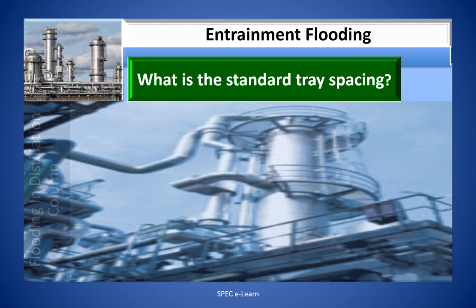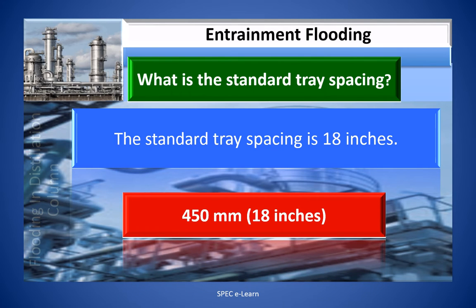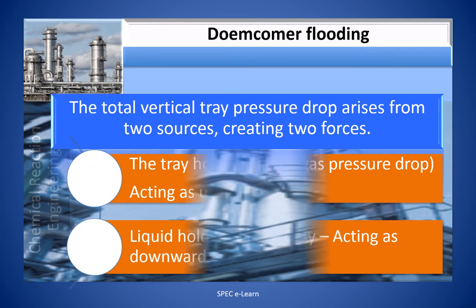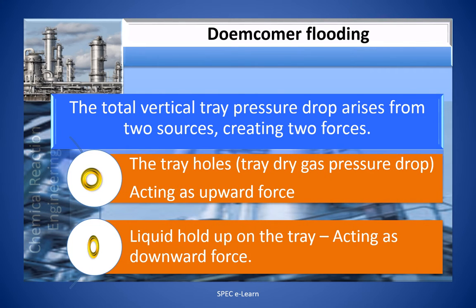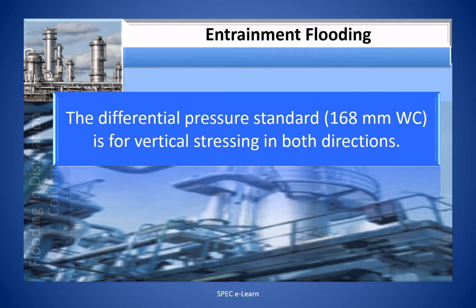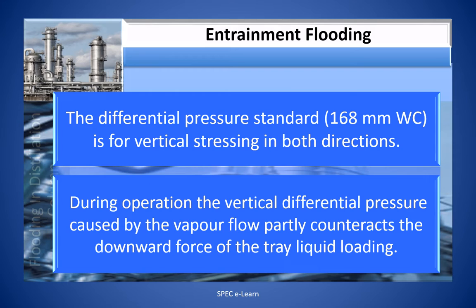The standard tray spacing is 18 inches, which equals 450 mm. On a working tray there are two forces acting on it: the upward force due to tray differential pressure — this is the dry gas differential pressure — and the downward force due to the liquid holdup on the tray. During operation, the vertical differential pressure caused by the vapor flow partly counteracts the downward force of the tray liquid loading.